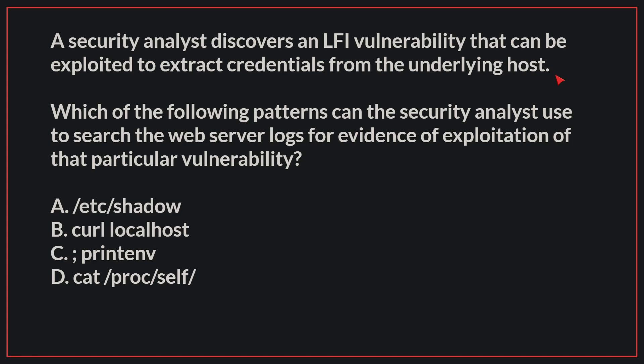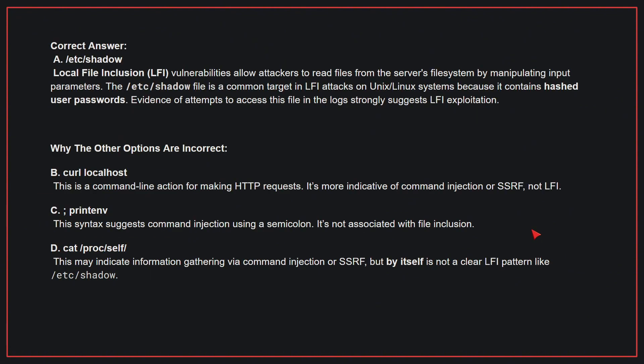The correct answer is A: /etc/shadow. LFI vulnerabilities allow attackers to read files from the server's file system by manipulating input parameters. The /etc/shadow file is a common target in LFI attacks on Unix/Linux systems because it contains hashed user passwords. Evidence of attempts to access this file in the logs strongly suggests LFI exploitation.